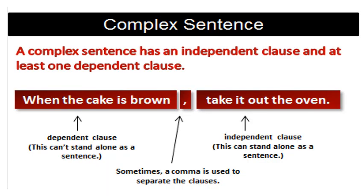Just a refresher for your memory. We said that complex sentences consist of two types of clauses. One of them is the independent clause and the other is the dependent clause — at least one dependent clause and one independent clause. The independent clause can stand alone, whereas the dependent clause cannot stand alone and needs completion. We'll talk about how we punctuate adverbial clauses and where we insert commas.